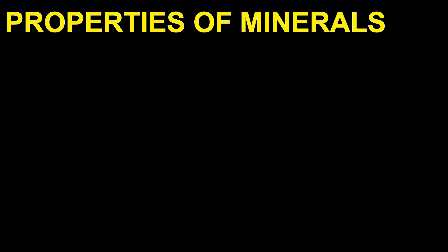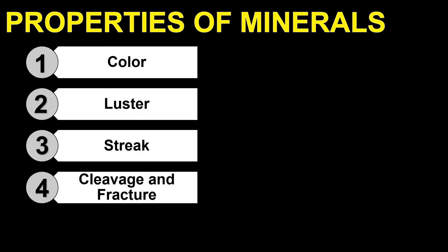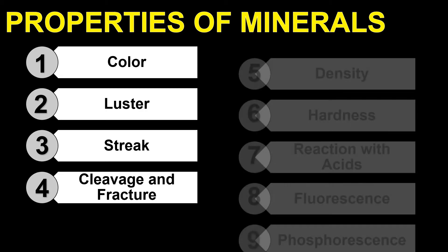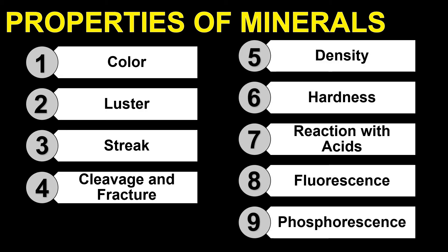Every mineral is recognized according to its properties that exist as a result of its chemical composition. Such properties may be identified subjectively or objectively, such as by running a test. The following are the properties of minerals: color, luster, streak, cleavage and fracture, density, hardness, reaction with acids, fluorescence, and phosphorescence.